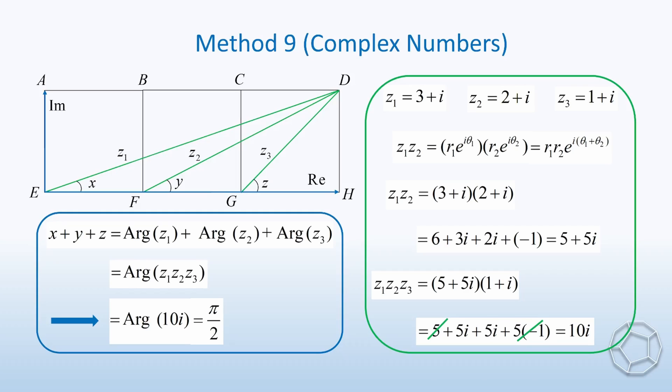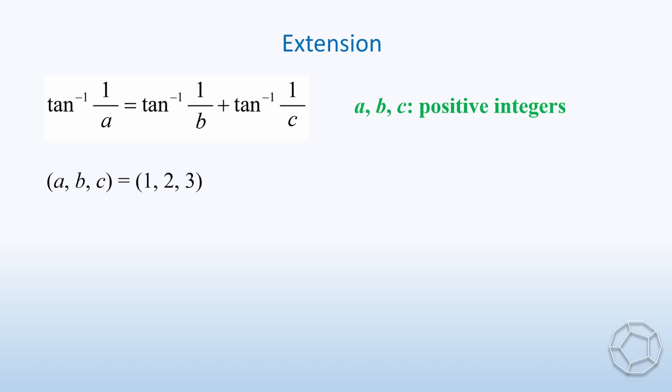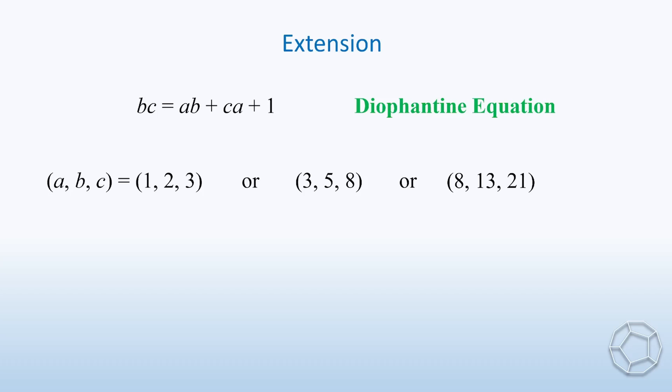But what can we obtain from this special result? Indeed, the identity arctangent 1 over 1 equals to arctangent 1 over 2 plus arctangent 1 over 3 is so beautiful that one may be curious to replace the numbers by unknowns a, b, and c, which are positive integers. Then we are eager to know if there are solutions other than 1, 2, and 3. And the answer is yes. For instance, we have two more sets of solutions, 3, 5, 8, or 8, 13, 21. If we change the form of the equation, then it is a Diophantine equation. BC is equal to AB plus CA plus 1. Now, it is about number theory.